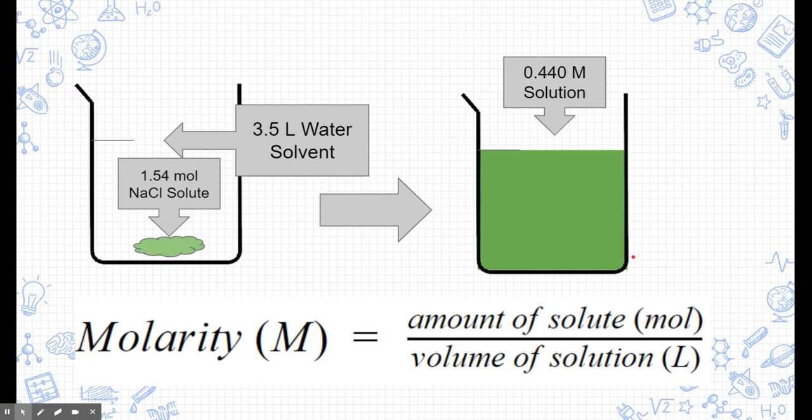Now what exactly does that mean? Let's take a look at this quick example here. We're going to take our values and plug them into a real life situation. Here we have a beaker, and eventually we want to make a beaker that's 0.440 molarity solution. So we're going to take 1.54 moles of sodium chloride, and we're going to put that in the bottom of the beaker. Then we're going to fill the beaker up to the 3.5 liter mark, and that's what's going to get us our solution that has a specific molarity. Remember, molarity is equal to the amount of solute divided by the total volume of that solution.